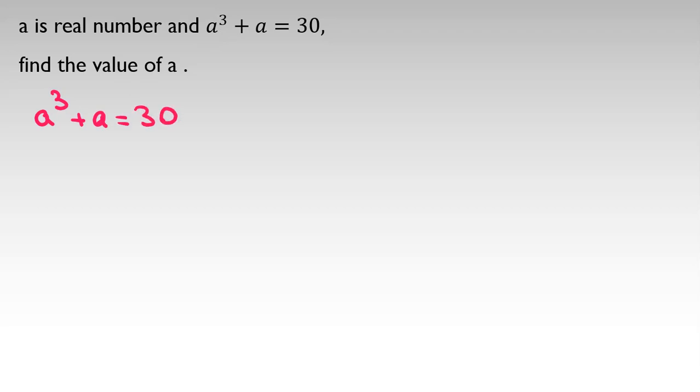When we have this, we can consider it as a polynomial. It's good to take all things to one side. If I take 30 to the left-hand side, we have a cubed plus a minus 30 equals zero.